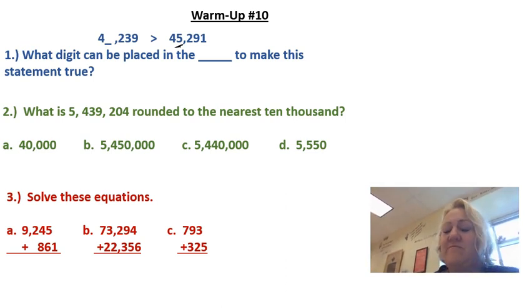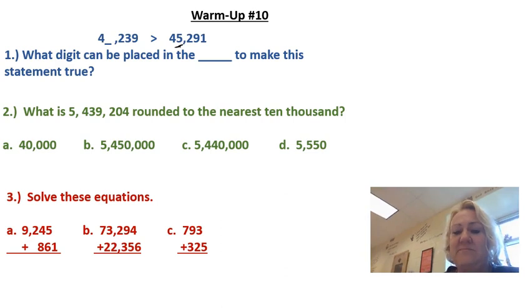Okay friends, let's solve these together. Which digit can be placed in the blank to make the statement true? Well, since the thousands place is missing, we have to look at the thousands place in the next number. So in the thousands place is the number five.